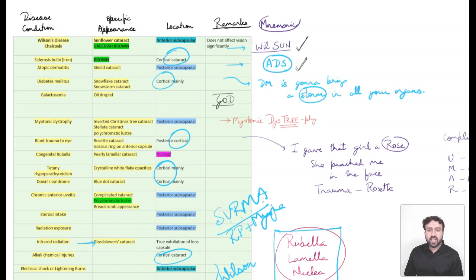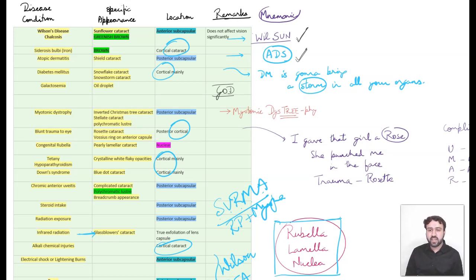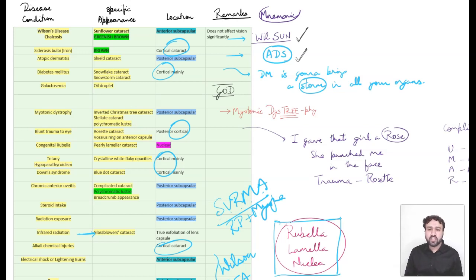I hope these tricks will help you remember all the cataract types, especially the volatile one-liners on this topic. In the next video, we'll be discussing all the images of cataracts so that it becomes easy to identify them — most of the time when cataracts are asked in exams, it's either a one-liner or an image-based spot diagnosis question. I hope you liked this video — please give it a thumbs up, subscribe if you're new here, and I'll see you in the next video. Goodbye.